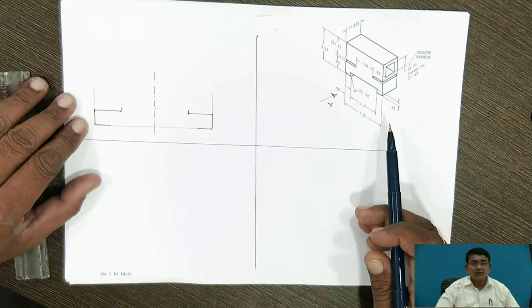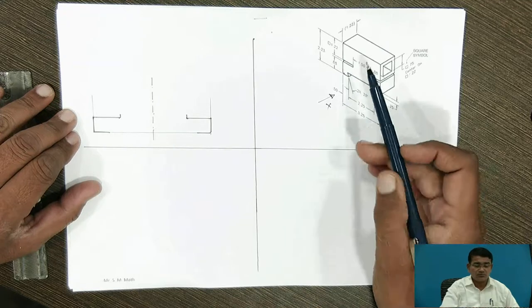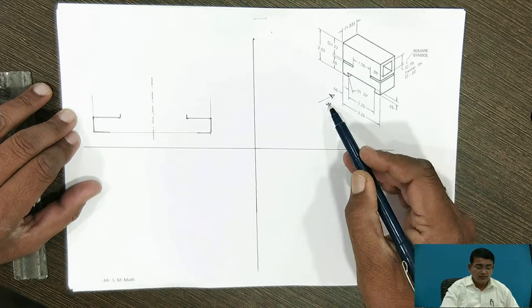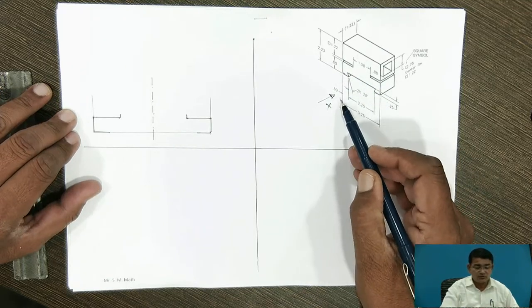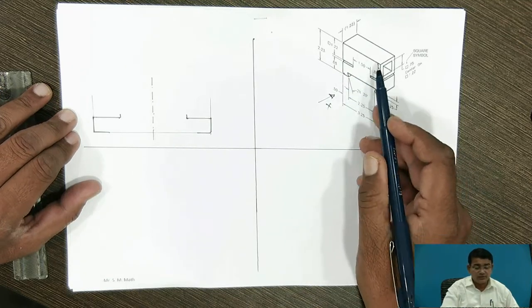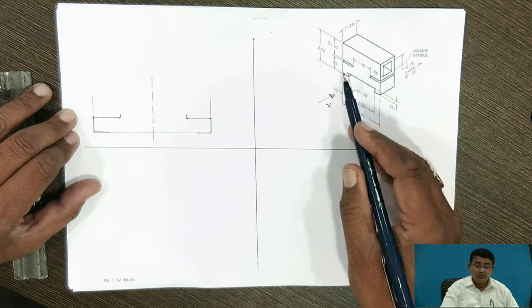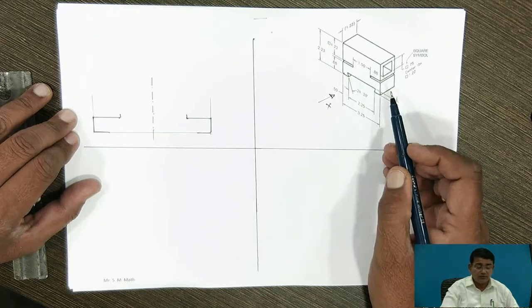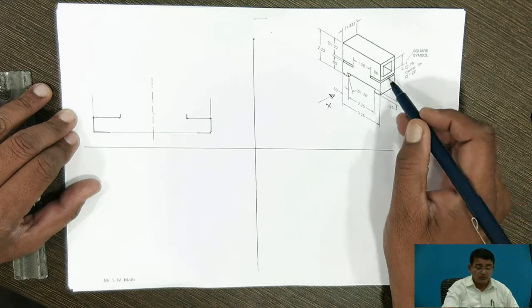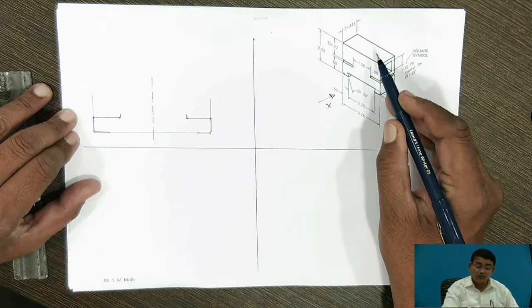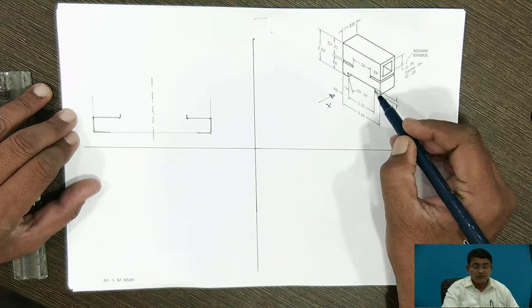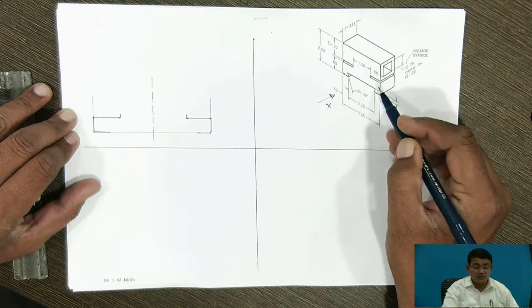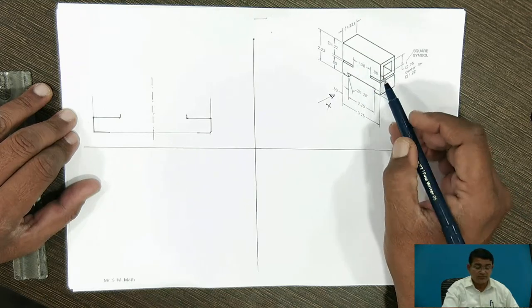I am taking this simple object. Here I am showing the arrow X — in the direction of arrow X, you have to draw the front view, the top view, and the side view. You have to calculate the measurements; the maximum dimensions are given.